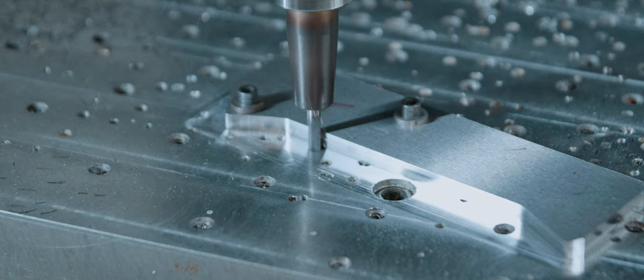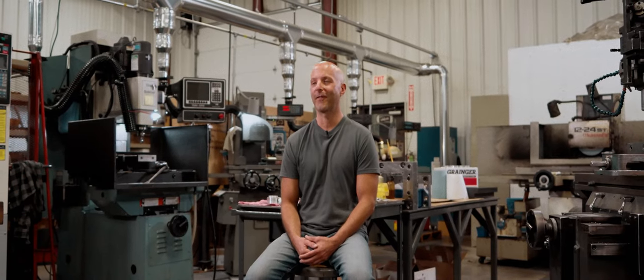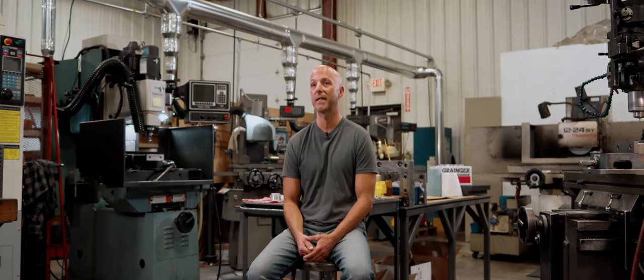There's maintenance involved in the machines—you have to make sure they're lubed and oiled properly. If the machine's not oiled properly, there could be catastrophic failures where the spindle will lock up and seize, and then you're down. You're not machining. You're out of business.